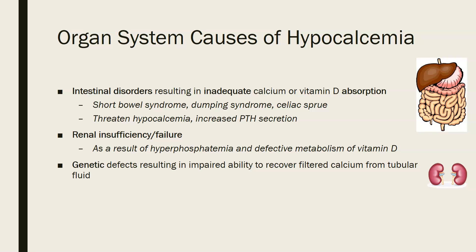Organ system causes of hypocalcemia include intestinal disorders that result in inadequate calcium or vitamin D absorption, such as short bowel syndrome, dumping syndrome (common after bariatric weight loss surgery), celiac sprue or celiac disease (wheat intolerance), and various inflammatory bowel disorders. These conditions typically lead to hypocalcemia and result in increased parathyroid hormone secretion.